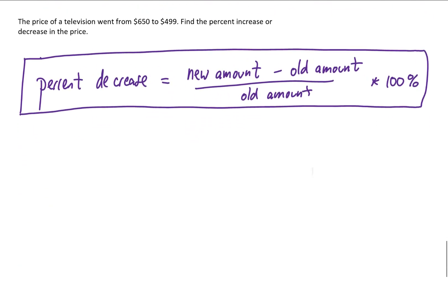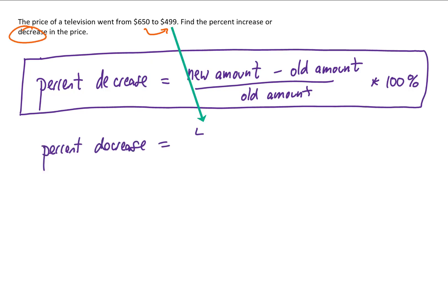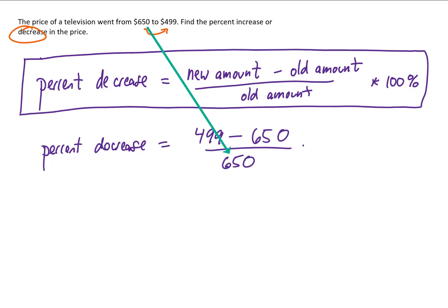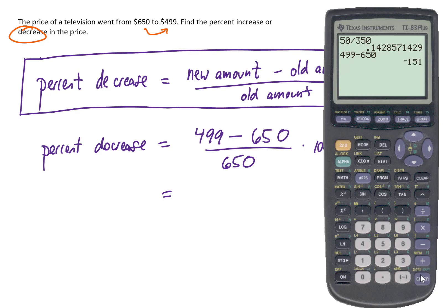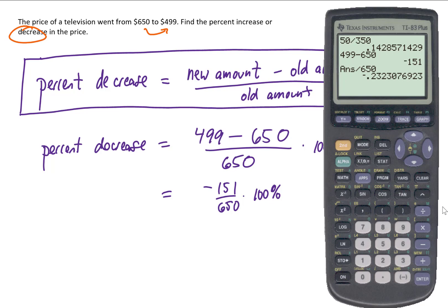Let's look at a percent decrease example. The price of a television went from $650 to $499 — find the percent change. The new price is $499, the old price is $650. Typing 499 minus 650 gives a negative number, which just indicates this is a percent decrease. Dividing that negative 151 by 650 gives the decimal −0.232. Converting to a percent gives 23.2%. The negative sign tells us the price decreased, but we typically answer by saying there was a 23.2% decrease in price.